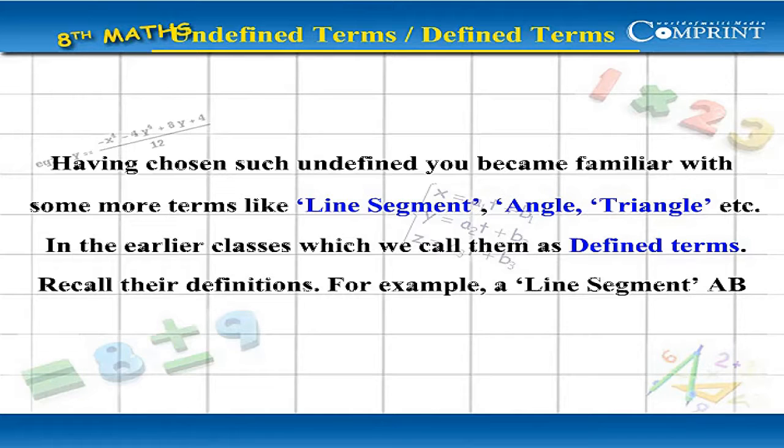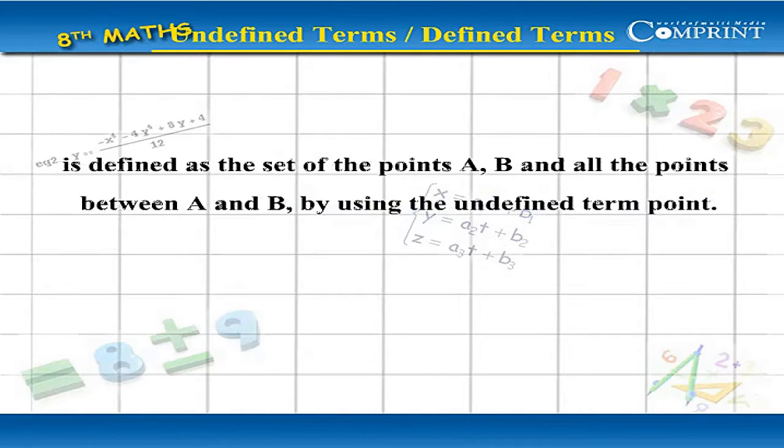Recall their definitions. For example, a line segment AB is defined as the set of the points A, B, and all the points between A and B, by using the undefined term point.